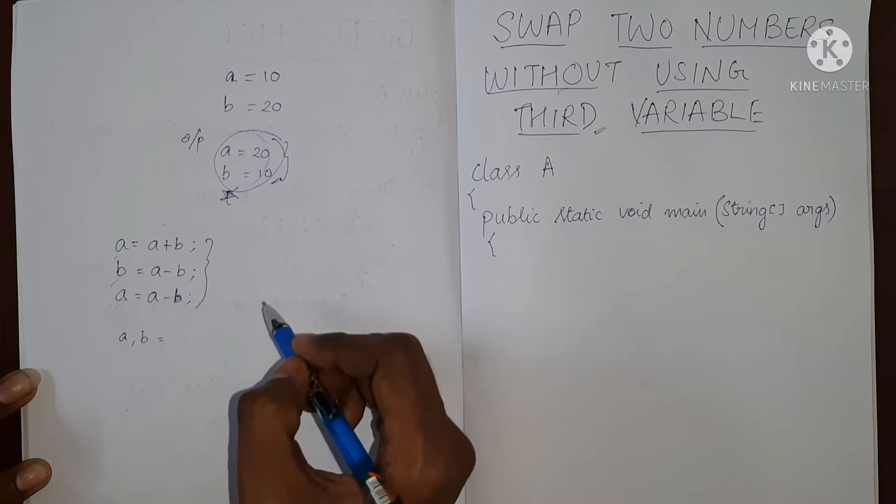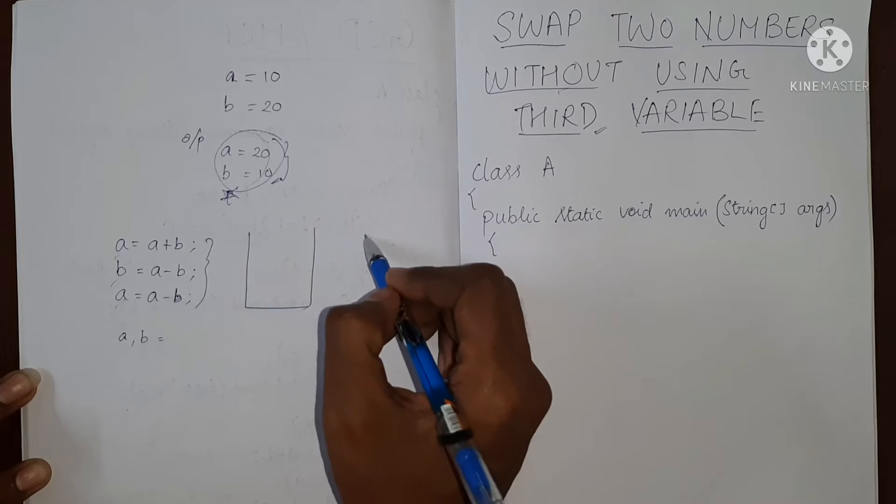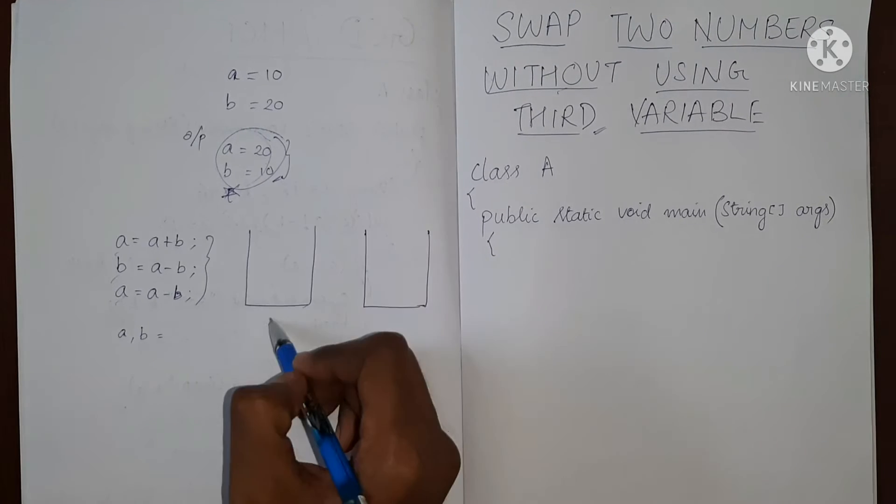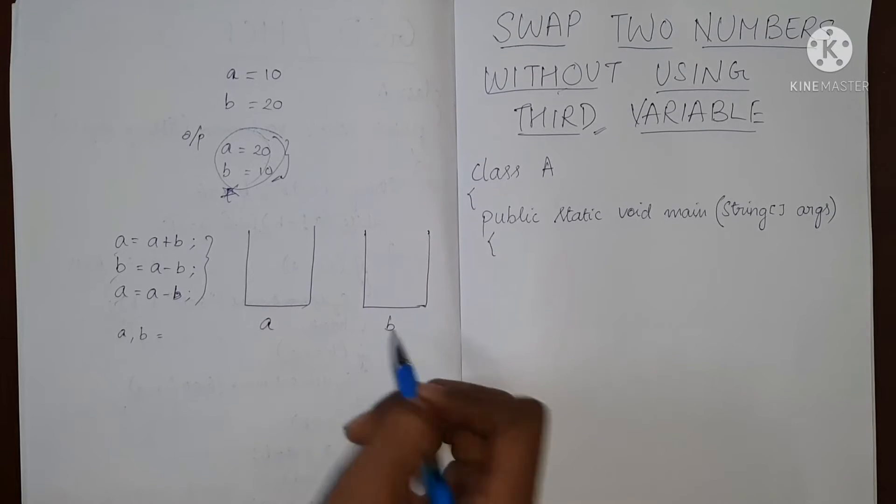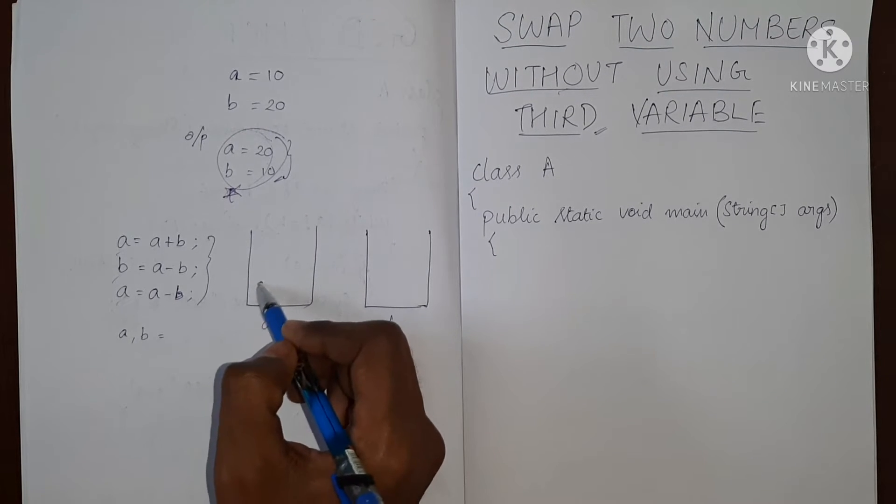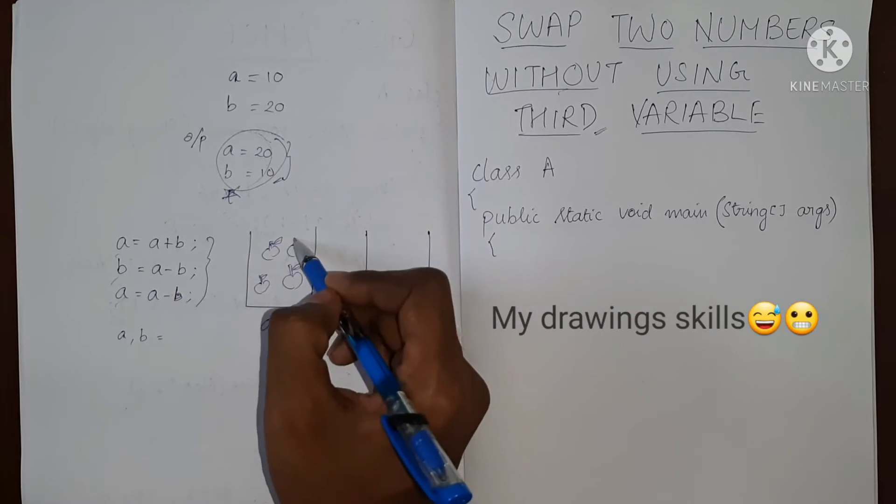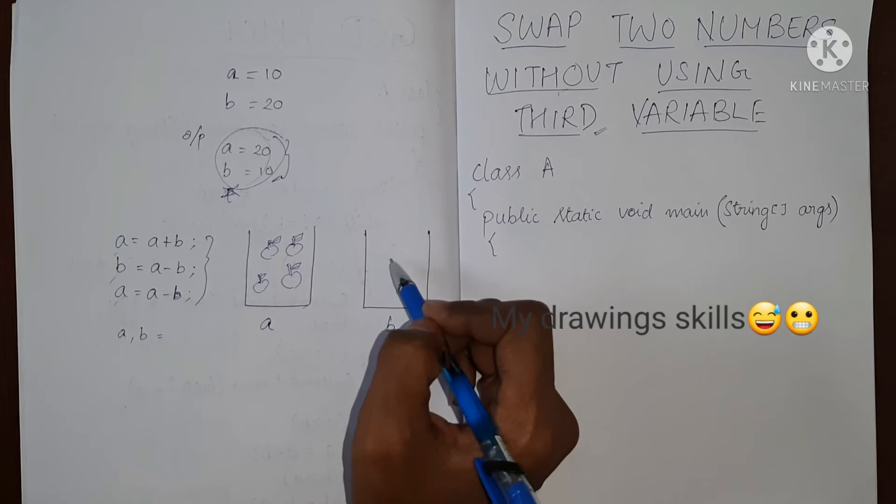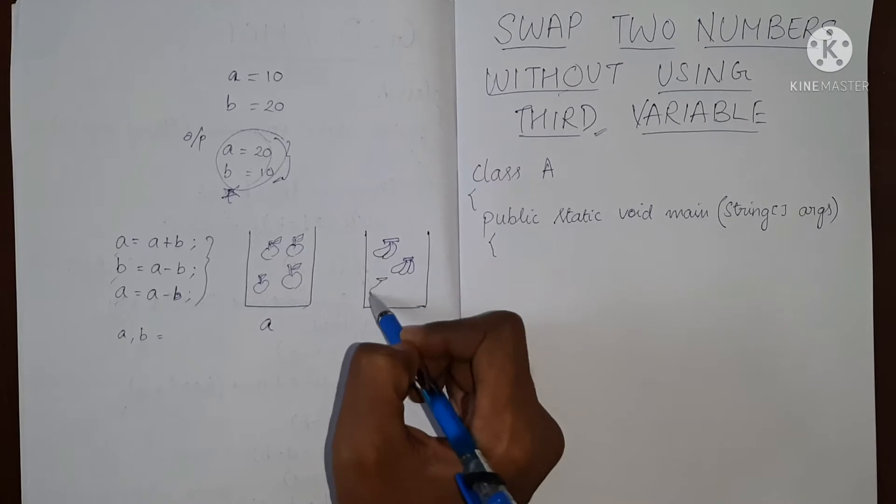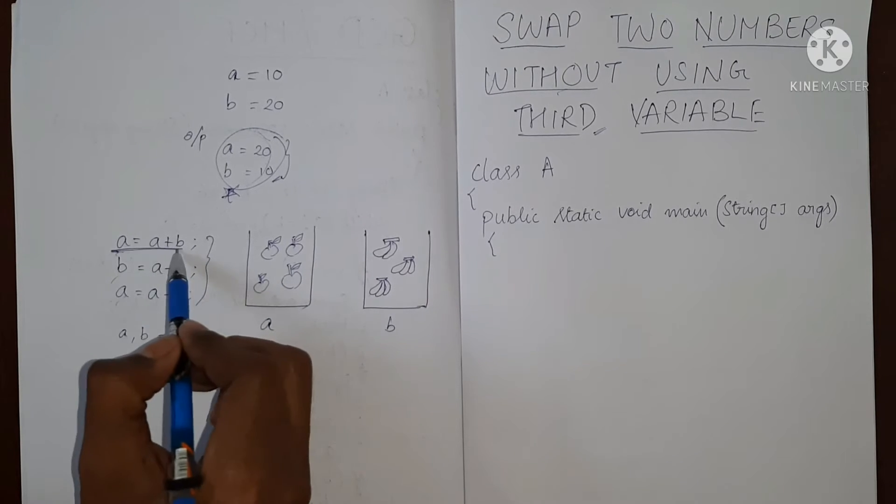For example, let me take a and b as two containers, this is a and this is b. Let's assume a has apples and b has bananas. So now in the first step what we did, we did a equal to a plus b.